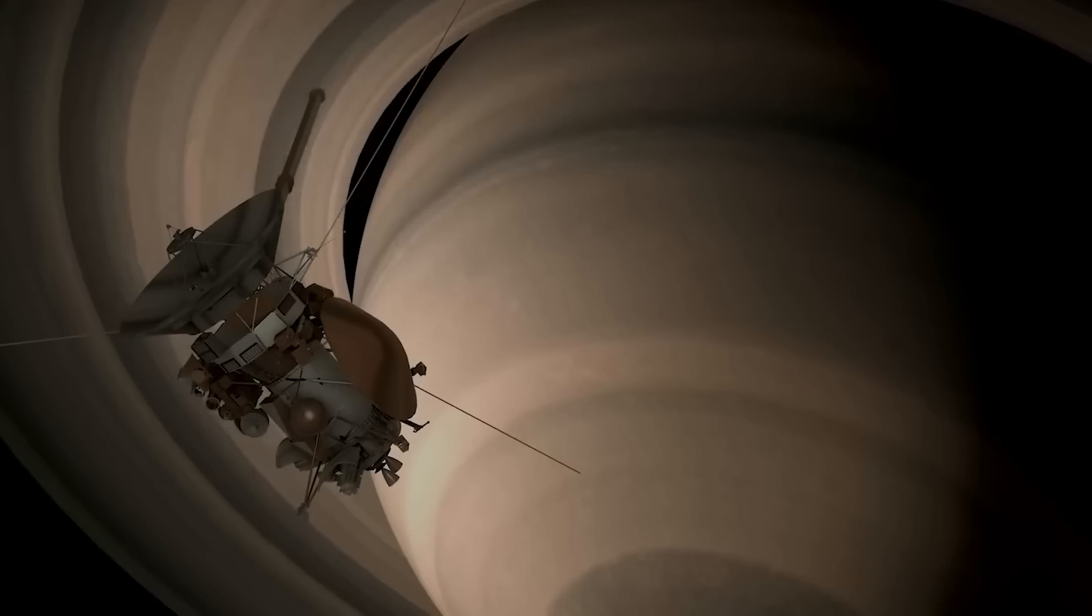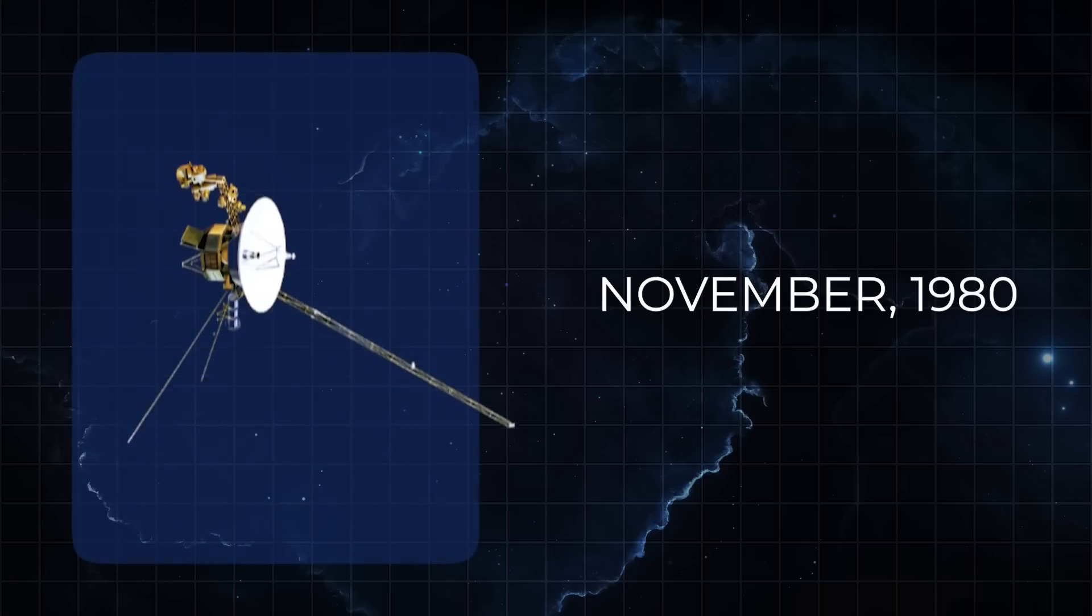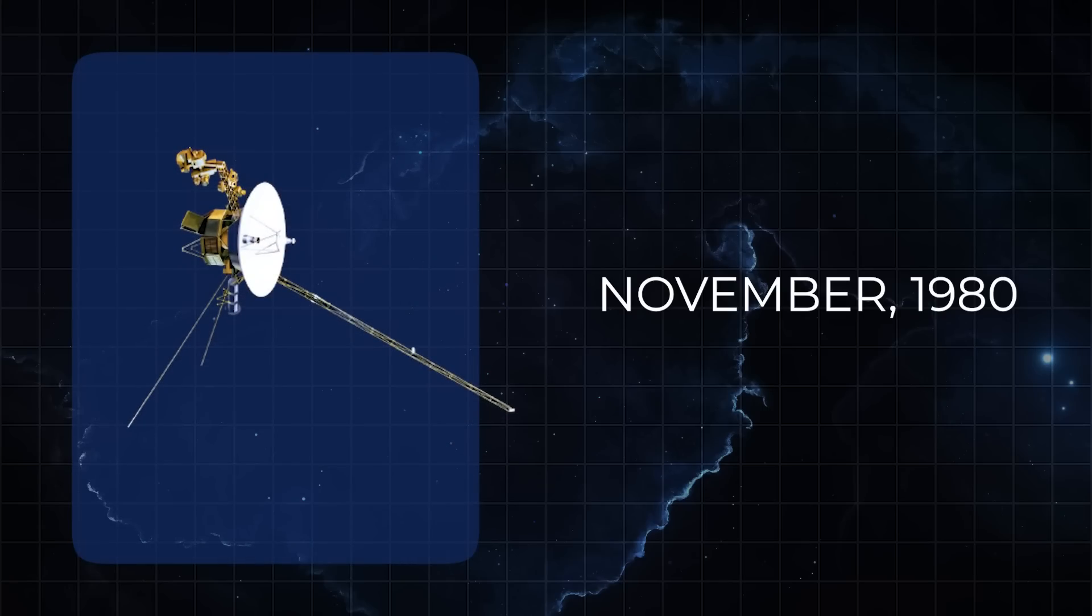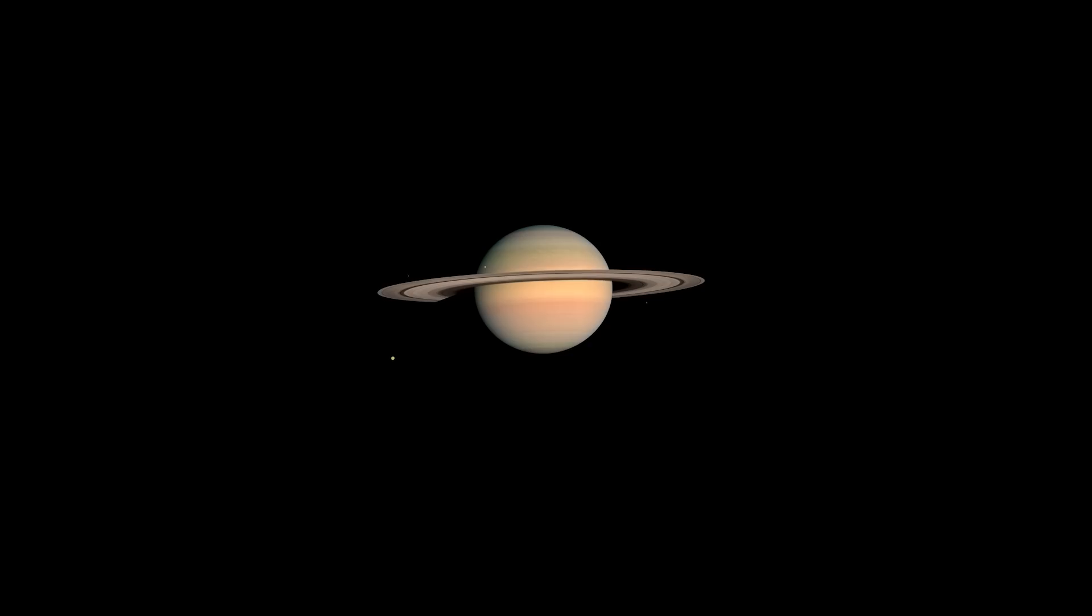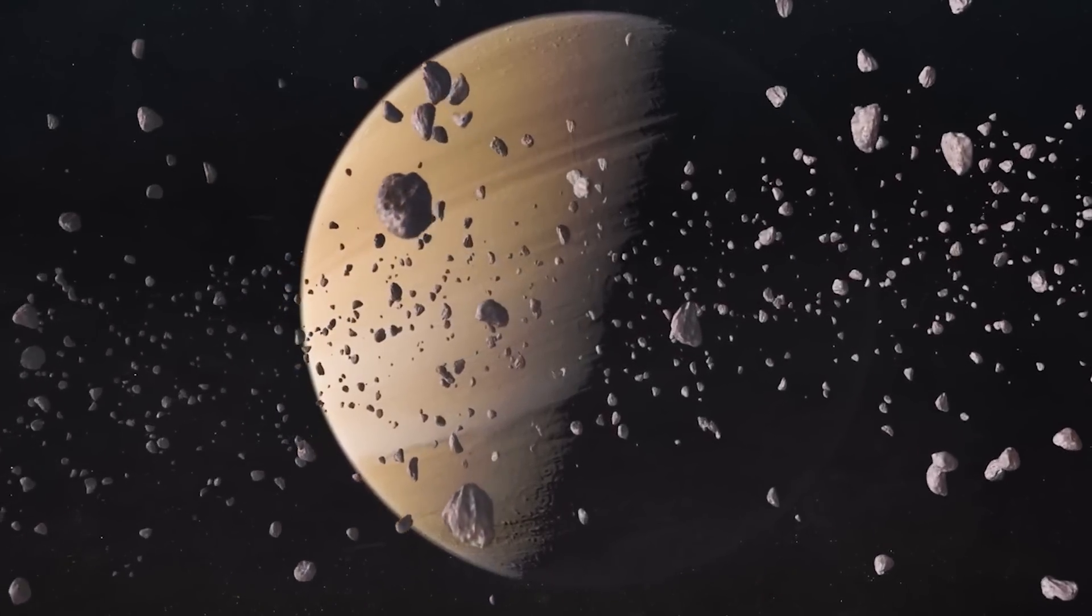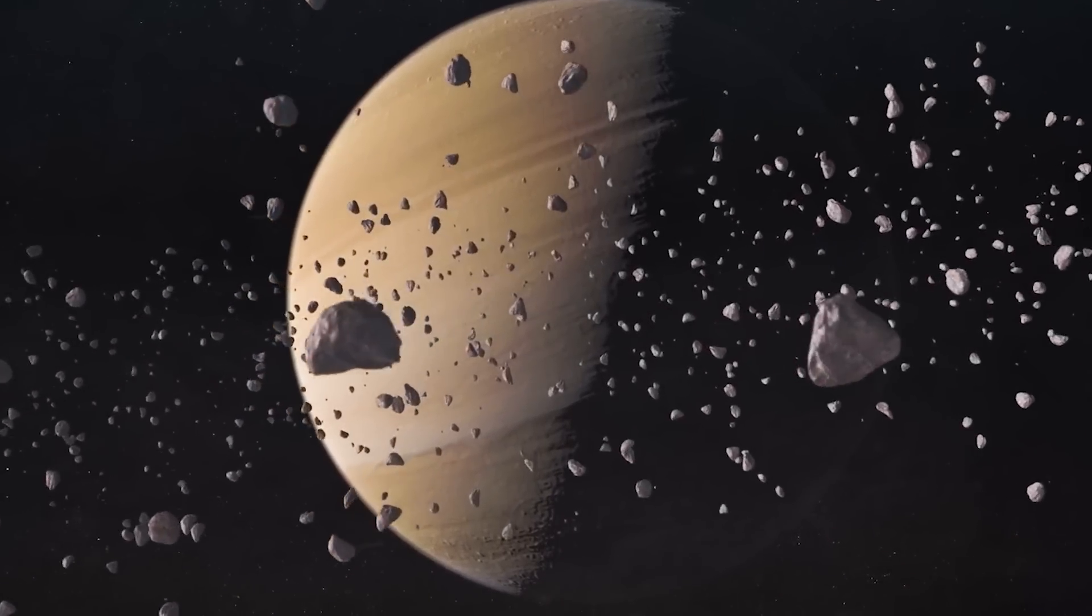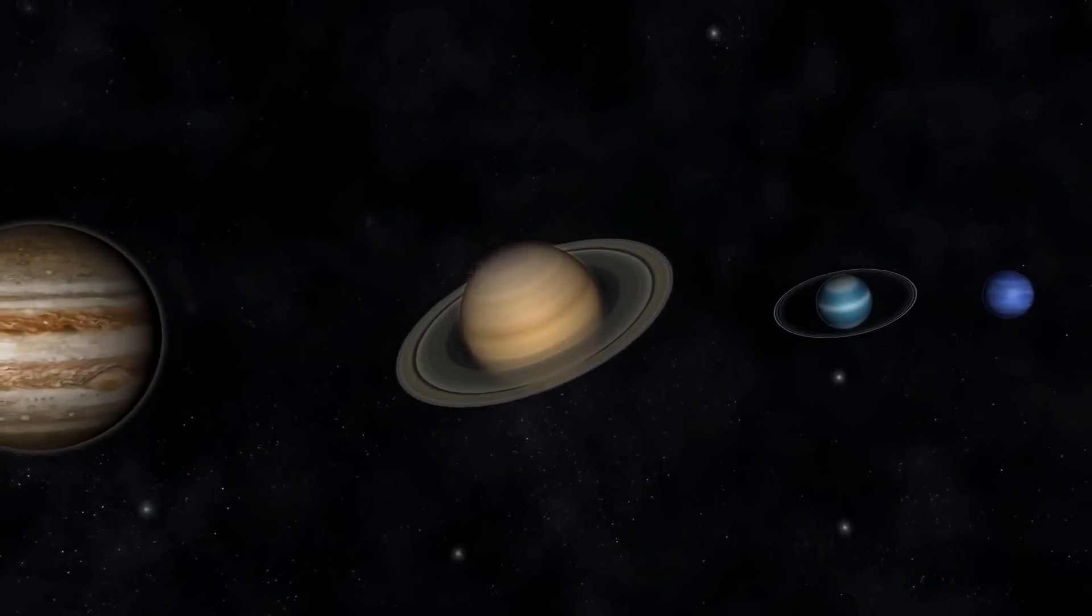But Jupiter was just a pit stop on Voyager's journey, and soon enough, both probes made the trip to Saturn with Voyager 1 reaching first in November of 1980 and Voyager 2 almost a year later in August of 1981. The visit to Saturn gave scientists a better understanding of Saturn's 10-hour days and a much more accurate measure of the planet's wind speeds, which could reach up to an incredible 1,100 miles an hour, the fastest of any planet in the solar system.